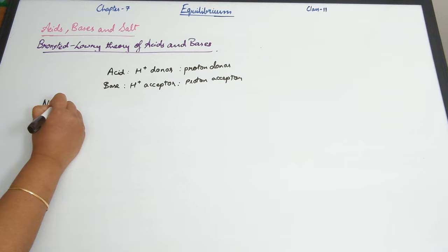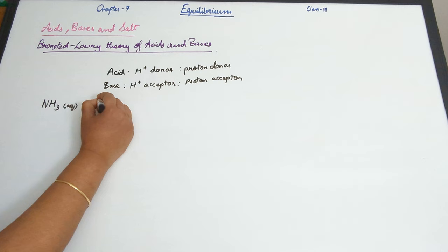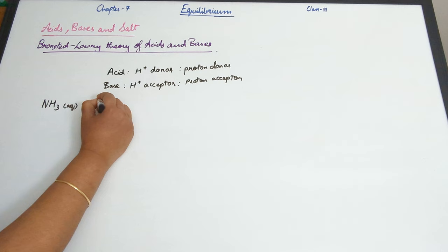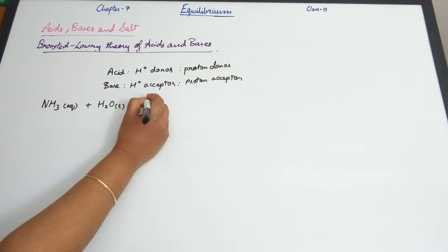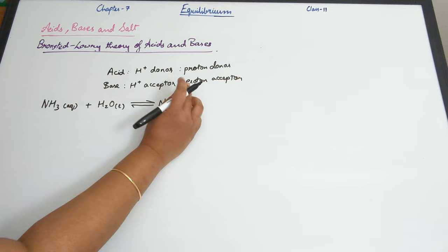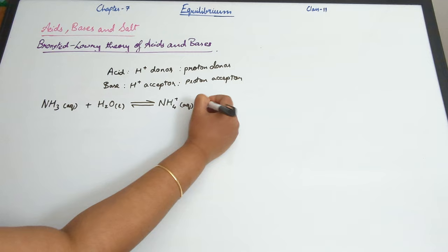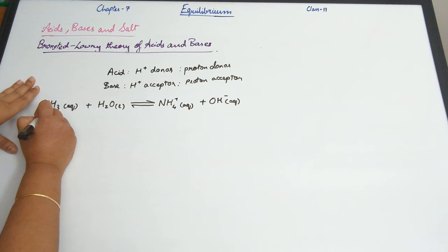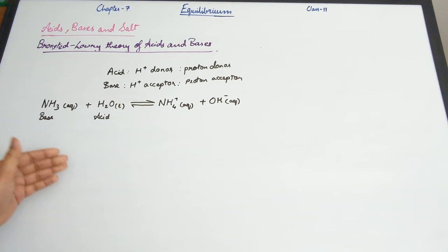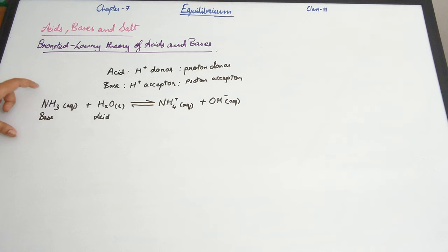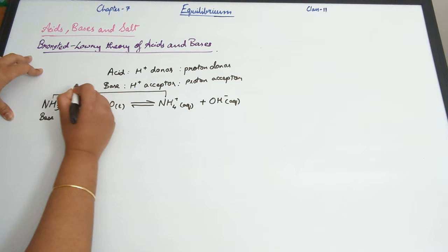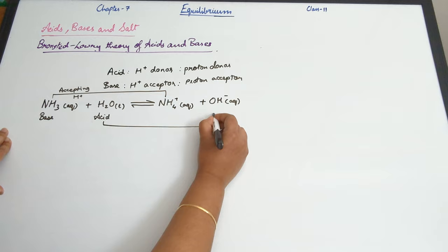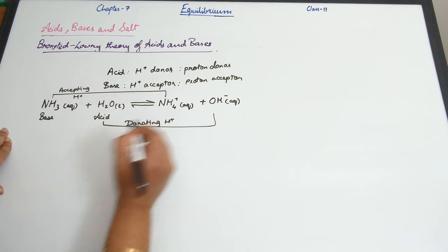Let's look more closely: NH3(aq) reacts with H2O(l) to give us NH4⁺(aq) plus OH⁻(aq). Ammonia is accepting an H⁺, or accepting a proton. The water, on the other hand, is donating a proton.